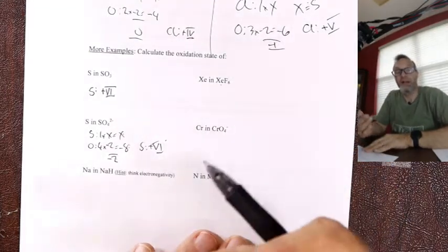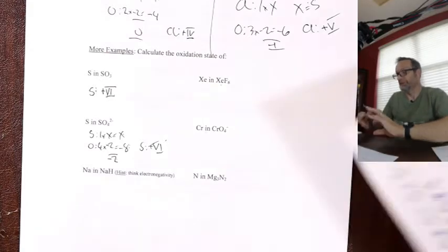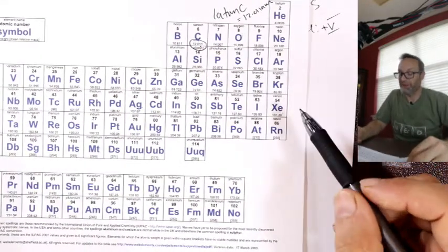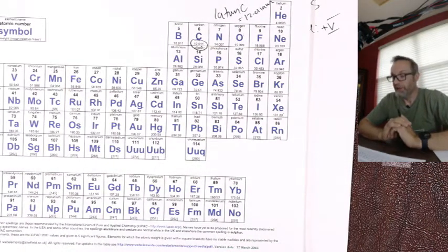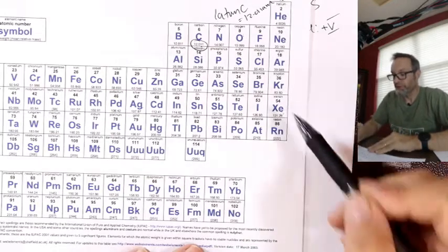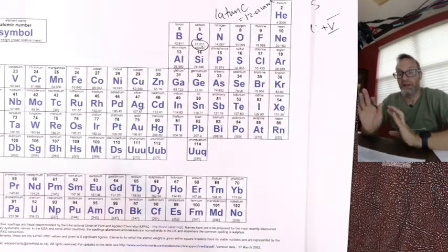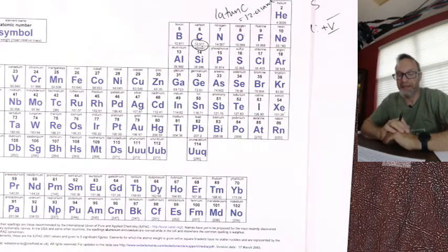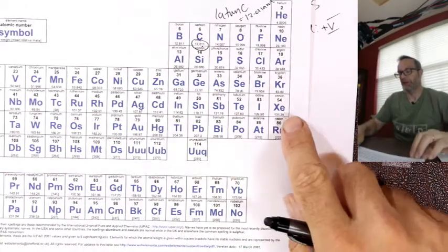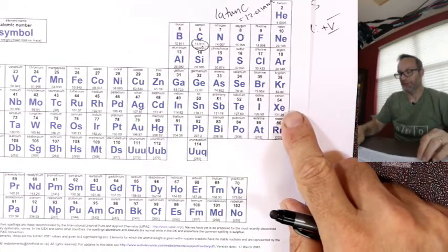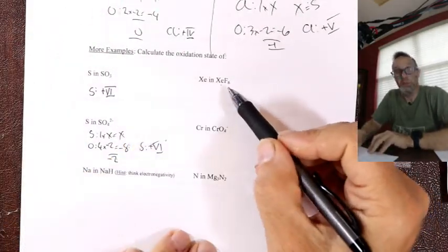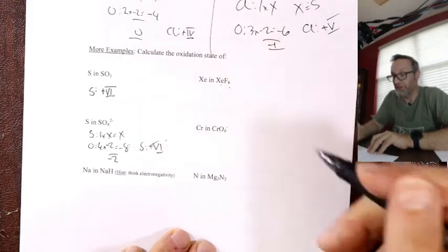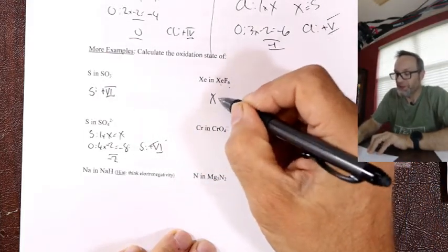For XeF₆ — xenon is a large, lower noble gas. For lower elements like xenon, those outer electrons, even though technically unreactive, can be forced to react with a very strong reagent because they're loosely held by the atom. So we get xenon hexafluoride — fluorine is always minus one, it's the winner every single time. Six minus ones means xenon must be a plus six.